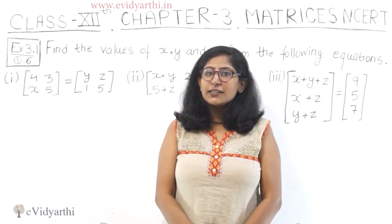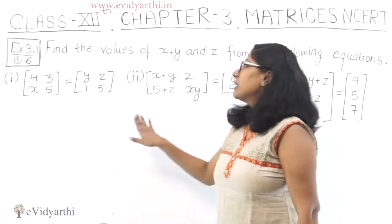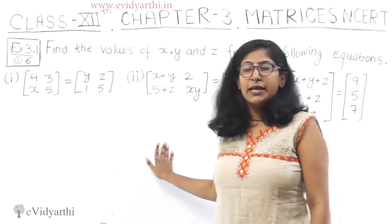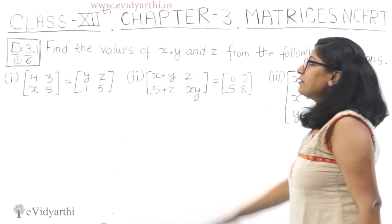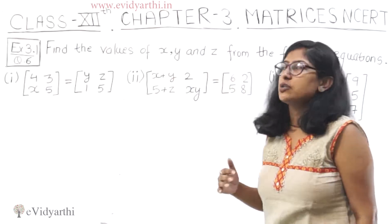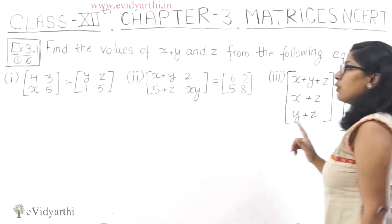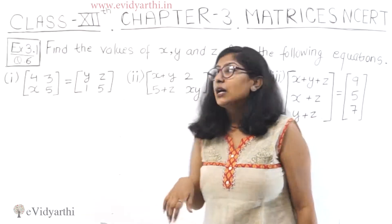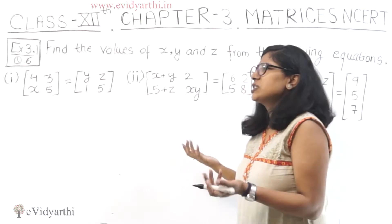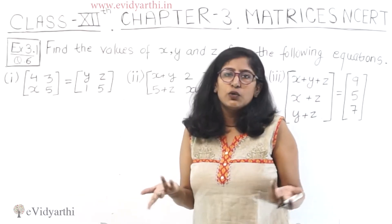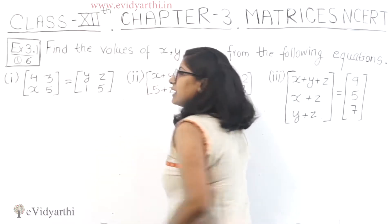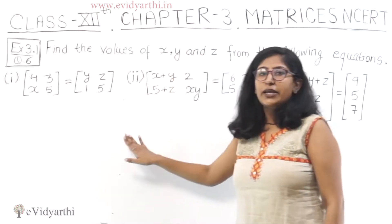Welcome back to evidhyarthi.in. Chapter number 3, we are talking about 3.1 Question number 6: Find the values of x, y, and z from the following equations. Here I want to tell you — when there are matrices, you might be confused, like x plus 7 equal to y. But here there are matrices, so these are the equations.